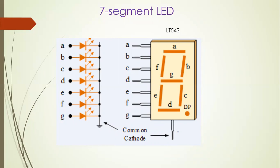For our experiment we are using the common cathode configuration. In common cathode, all the cathodes are shorted and given to ground, and input is given to all the anode terminals. So whenever we give logic 1, the diode will be forward biased and it will start emitting light. Hence we have to give logic 1 to energize the LED.